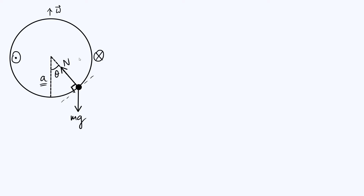Those are the only two actual forces acting on the bead. But if we analyze this system from the perspective of a frame which is co-rotating with the hoop, then we also get a fictitious force appearing, which is the centrifugal force. The centrifugal force always acts radially outwards from the axis of rotation. We can draw a horizontal line pointing outwards and label it FC for centrifugal force. It's a fictitious force, but for all practical purposes it behaves the same way as the other two forces, so it's fine to include it in this diagram.